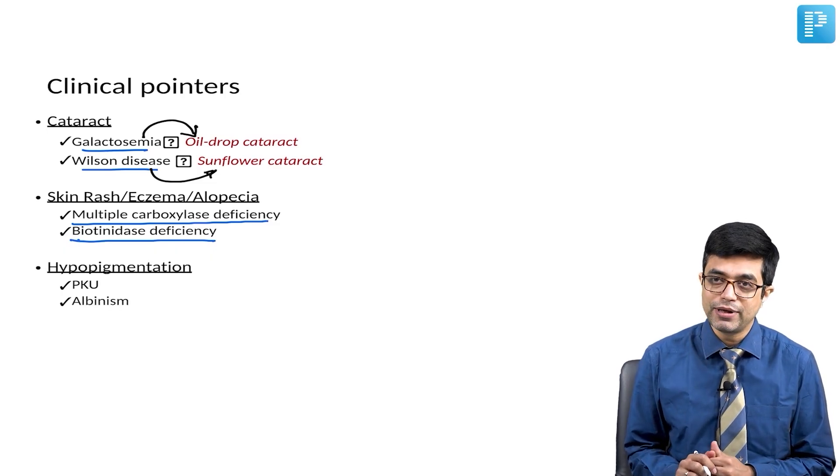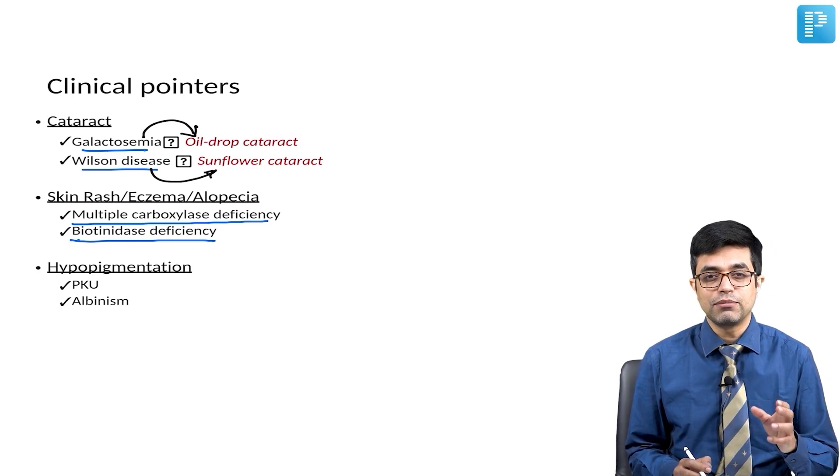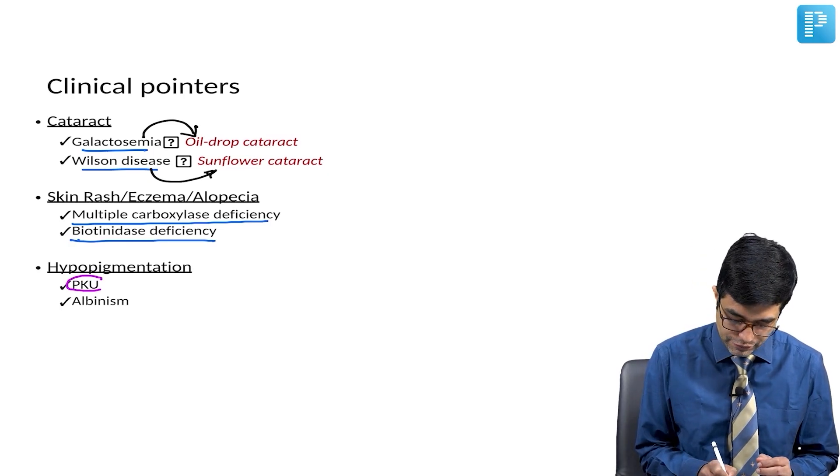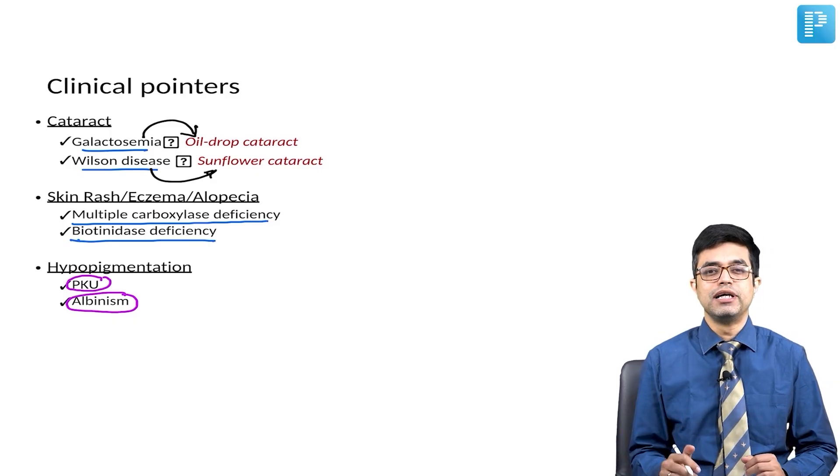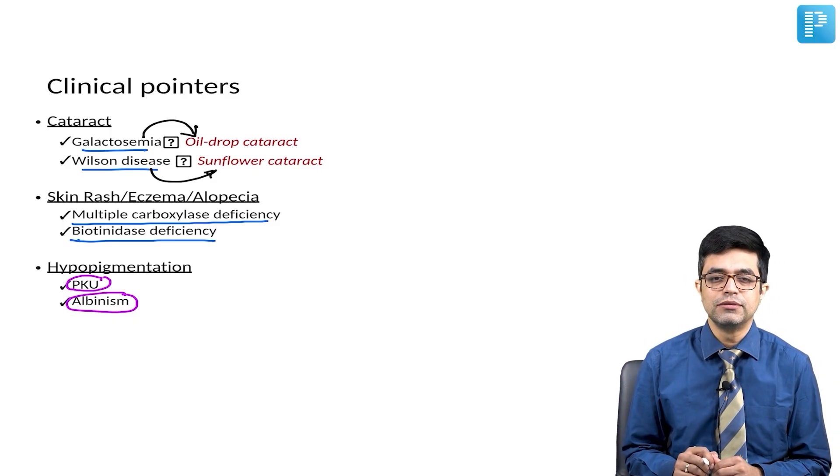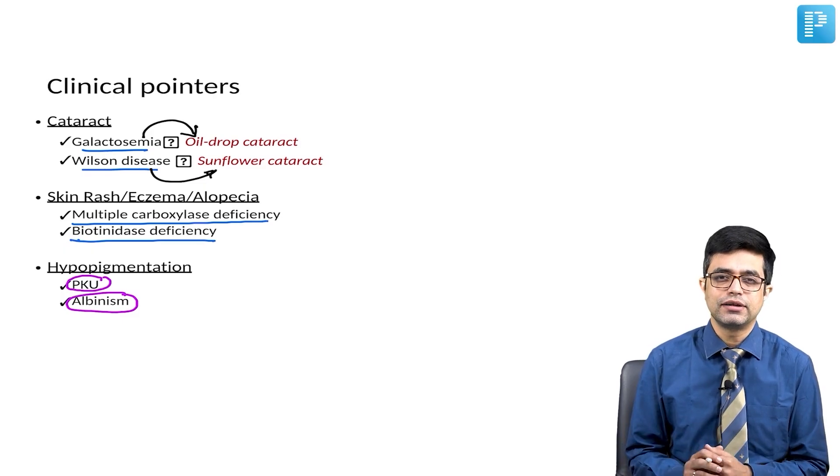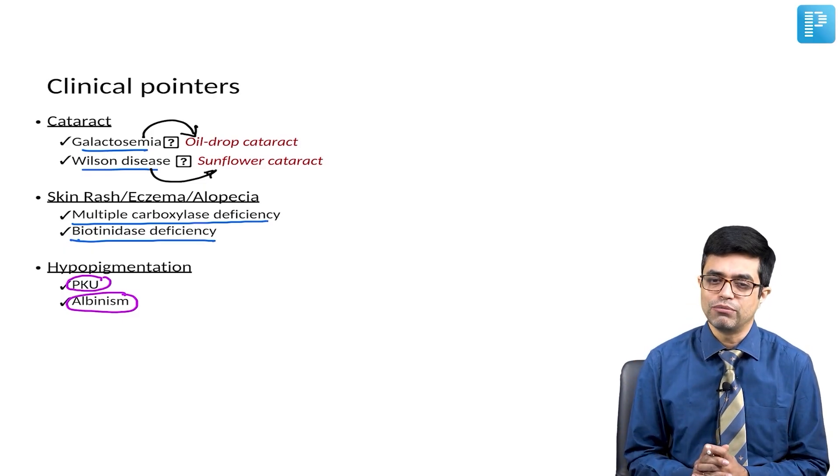And finally, we have hypopigmentation. Hypopigmentation may be a feature of tyrosine metabolic defects, which includes phenylketonuria and albinism. Albinism has its own multiple varieties. It may be oculocutaneous albinism or only ocular albinism, or it may be associated with other syndromes like Hermansky-Pudlak syndrome, as we will see in the subsequent modules.